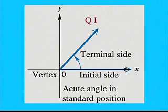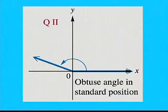Whereas, this is an example of an obtuse angle. Again, its initial side lies along the positive x-axis, and its terminal side, in this case, lies in quadrant 2. And what that means for an obtuse angle is that it's an angle that's between 0 degrees and 180 degrees.